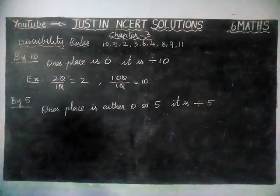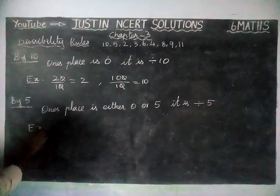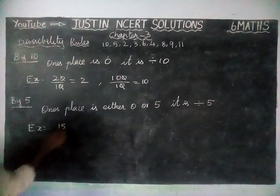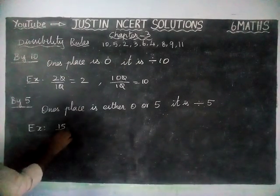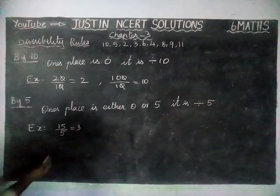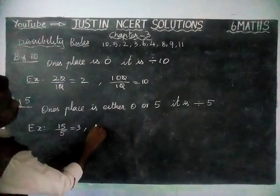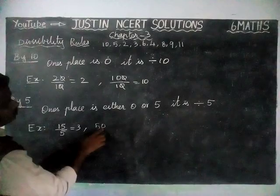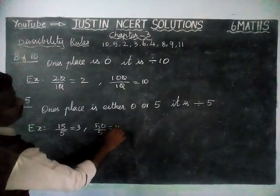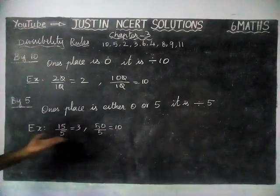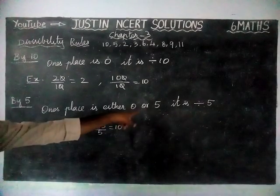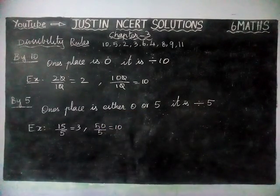We will check it by using examples. We will take number 15 — the 1's place is ending with 5. We check: 1×5 is 5, 3×5 are 15. Next, we will take number 50 — the 1's place is ending with 0. 10×5 are 50. So like this, if the 1's place is ending with 0 or 5, then it is divisible by 5.